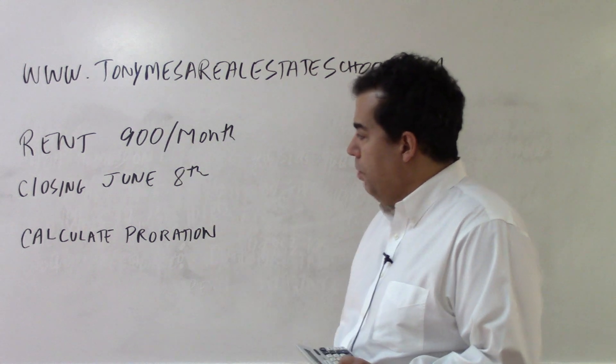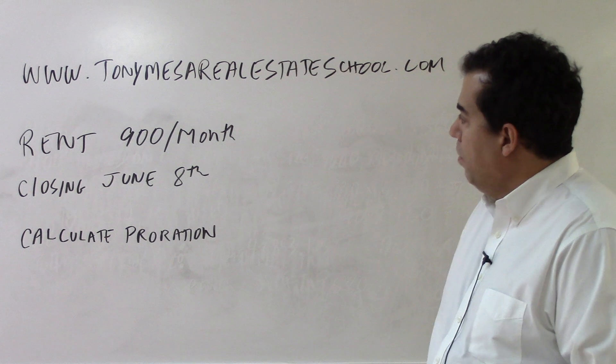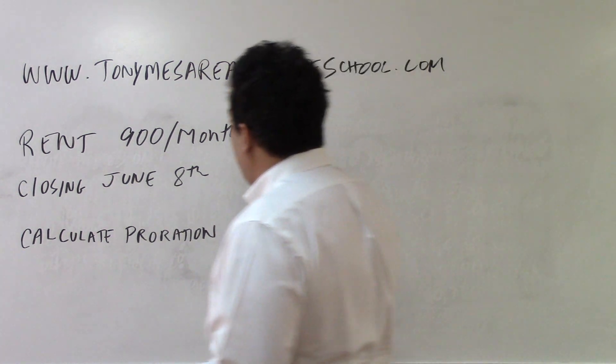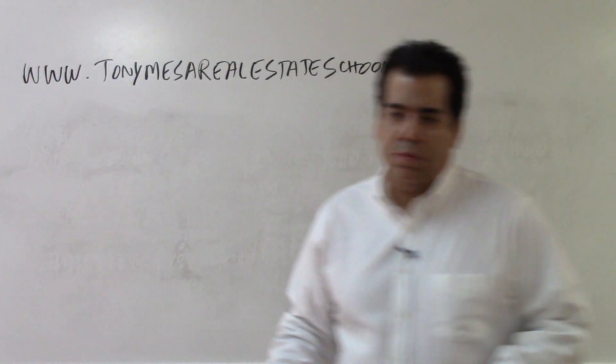Here in this rent proration, the rent is $900 per month and the closing is June 8th. So what I'm going to do is I'm going to erase part of what's on the board here just so that you can see clearly how I am doing the problem.